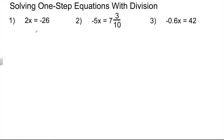Solving one-step equations with division. In problem number one, we have 2x is equal to negative 26. A lot of students get lost here because they forget the meaning of 2x — it really means 2 times x. The inverse of multiplication is division, so we're going to divide each side by 2, using the division property of equality. 2x divided by 2 leaves us with 1x, and negative 26 divided by 2 is negative 13.